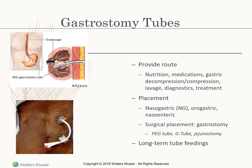Gastrostomy tubes provide nutrition, a place to safely give medication, gastric decompression, lavage in case of overdose, and are used for diagnostics and treatment. Placement is either orogastric or nasogastric. Surgical placement would be a gastrostomy, also known as a PEG tube, G tube, or jejunostomy, depending on where it is placed. This is usually for long-term tube feedings.